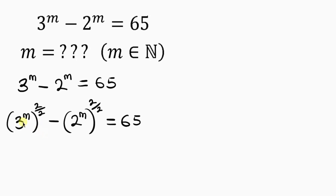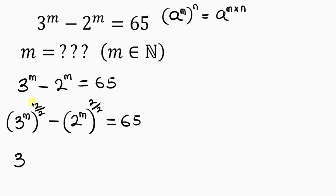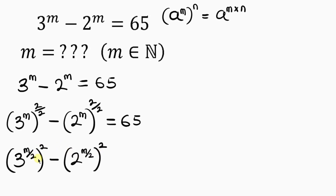Now I want to apply a trick here: use the power inside to multiply the power outside. I'm going to apply the law of indices, which says whenever I have a base a raised to power m, and this m is raised to another power n outside, we write down the base and multiply the powers m times n. So 3 to the power of m over 2, all raised to power 2, becomes 3 to the power of m over 2. The same thing happens for 2 to the power of m over 2, all raised to power 2. Equal to 65.